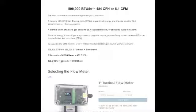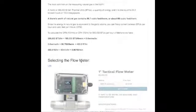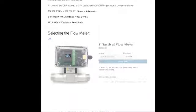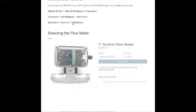483.5 cubic feet per hour divided by 60 minutes per hour is 8.06 cubic feet per minute. So you would need a mass flow meter that can measure either 483.5 cubic feet per hour or 8.06 cubic feet per minute.